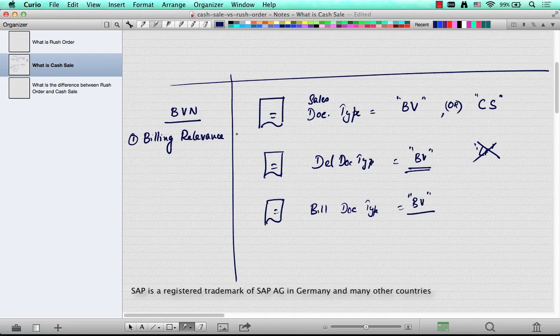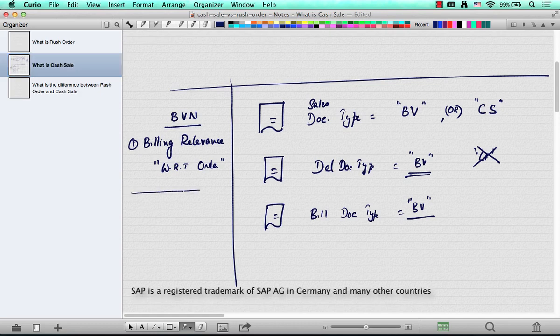So for cash sale, the billing relevance is with reference to order. So this is the configuration at the sales document level. That's different from the way standard configuration is done.